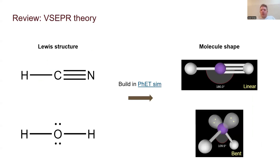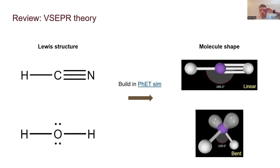With VSEPR theory we have a sense of the geometry based on the space that electron domains occupy. But we also need to take into consideration whether polarity influences this. This gives us an idea of how polar a bond is and how polar a molecule is.